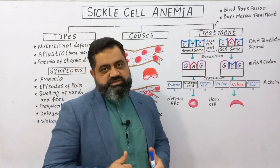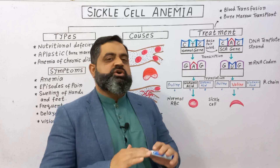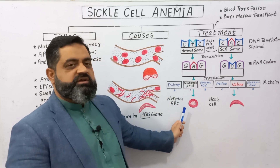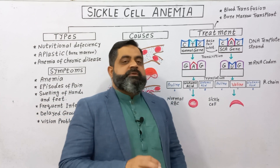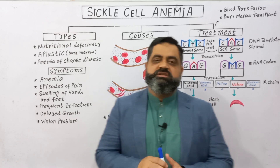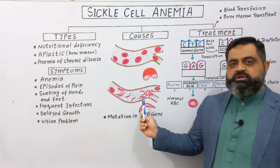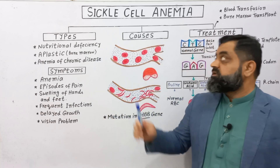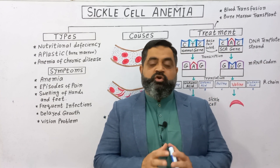This one base pair change alters one amino acid, and this single faulty amino acid changes the whole structure of hemoglobin. This abnormal hemoglobin changes the entire structure of the RBC, converting the normal RBC into a sickle cell RBC. When these cells are released into the bloodstream, the blood capillaries become clogged, there is blockage, oxygen delivery to body tissue is lost, and the result is sickle cell anemia with many different complications.